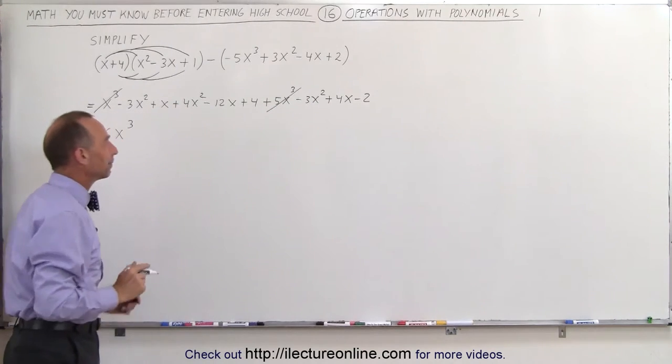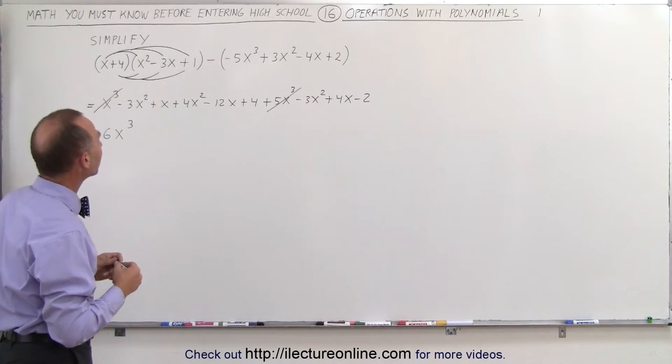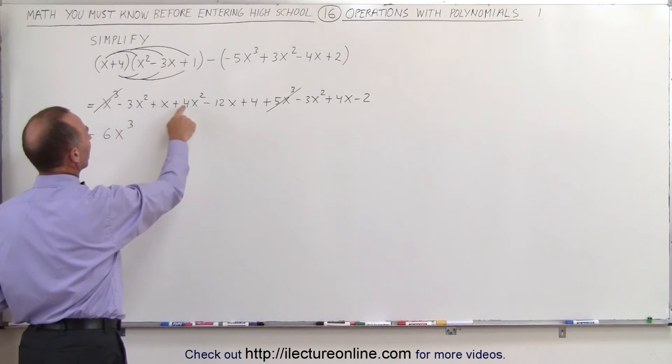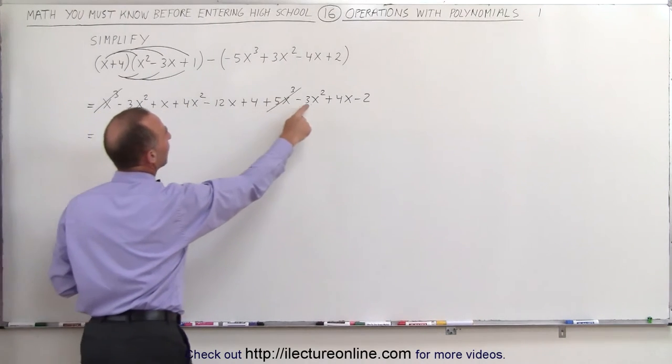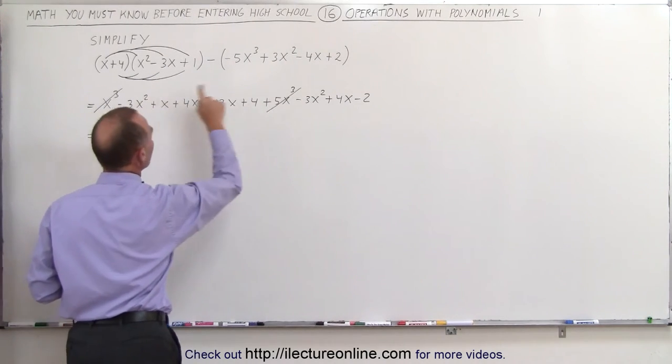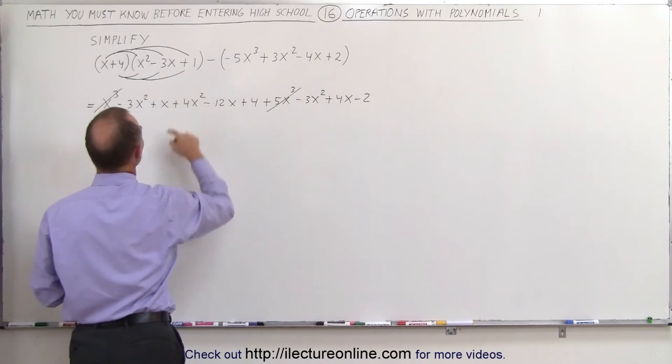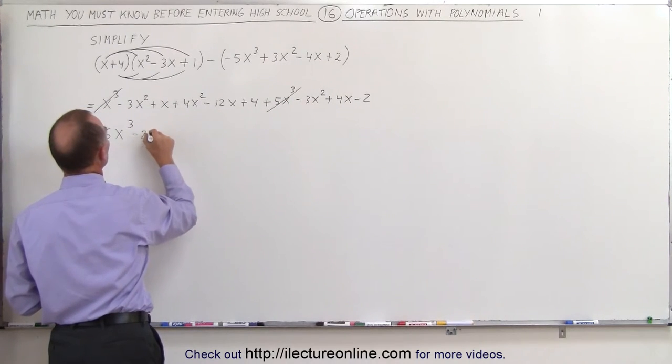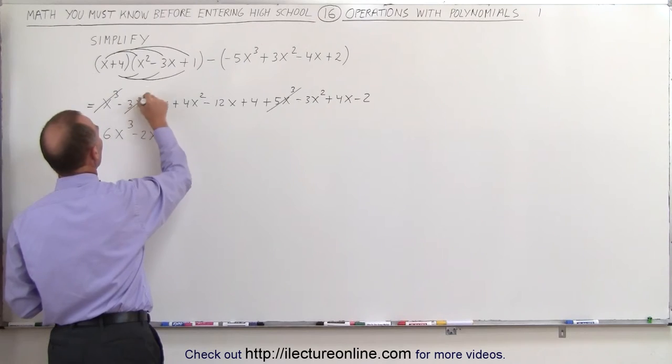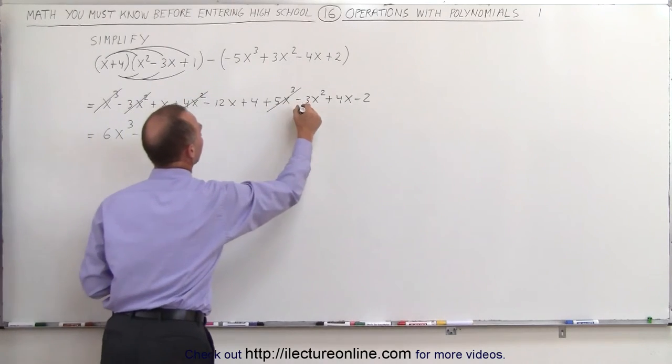we know we don't have to go back to that. Next, we need to collect all the x squared terms. Minus 3x squared plus 4x squared and minus 3x squared. So minus 3 minus 3 is minus 6, plus 4 gives us a minus 2x squared. Again, we cross out the terms we've already accounted for.